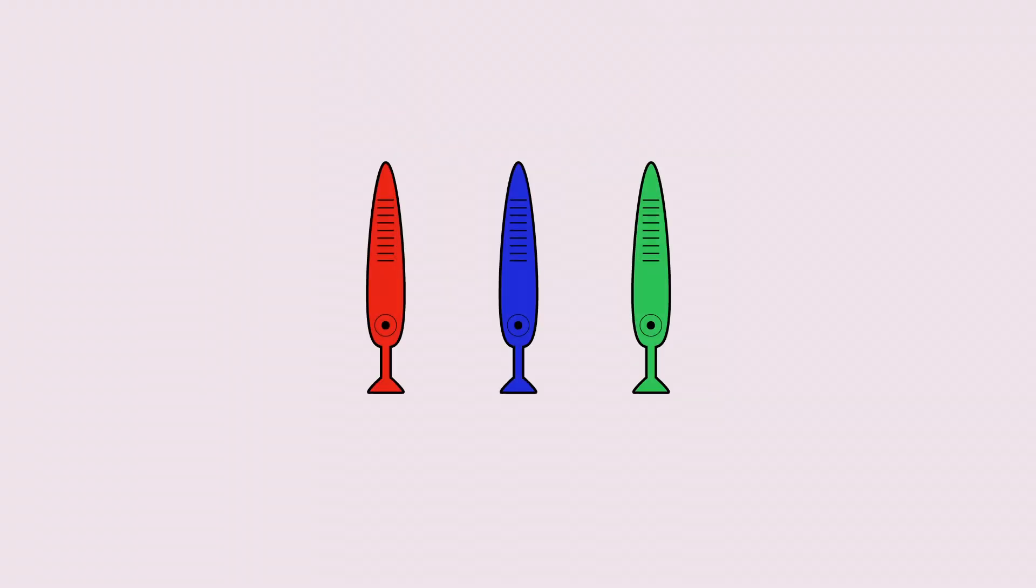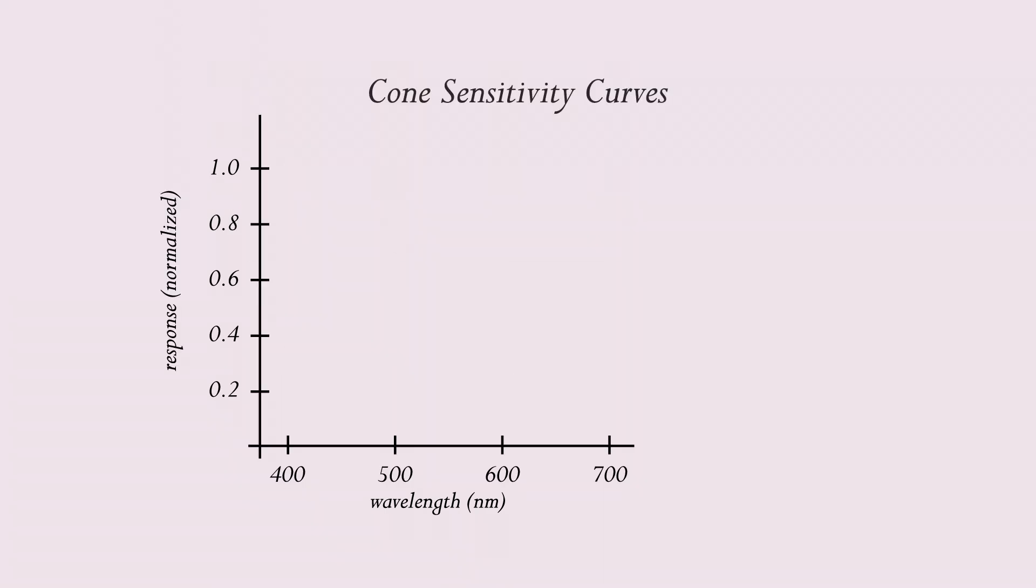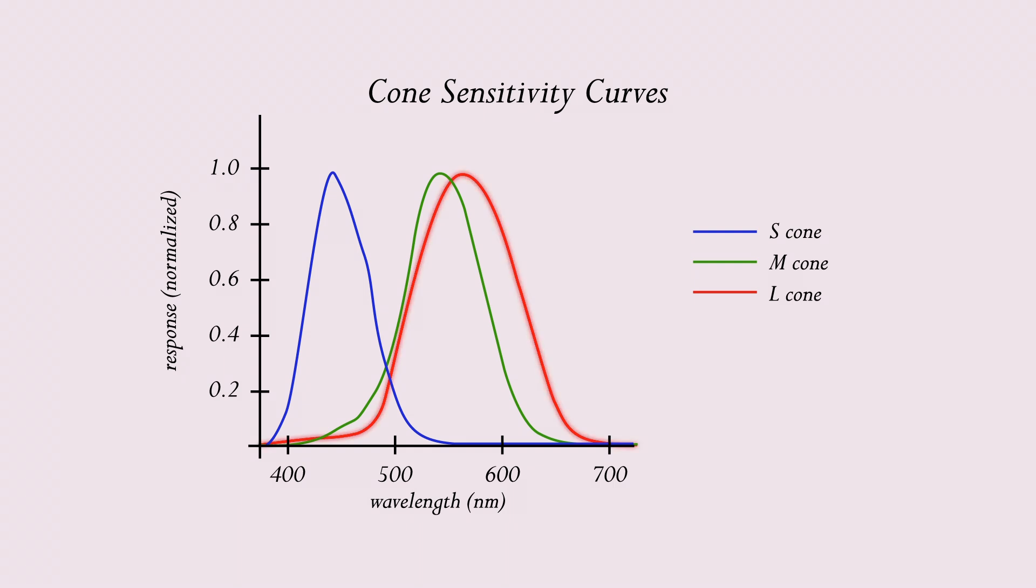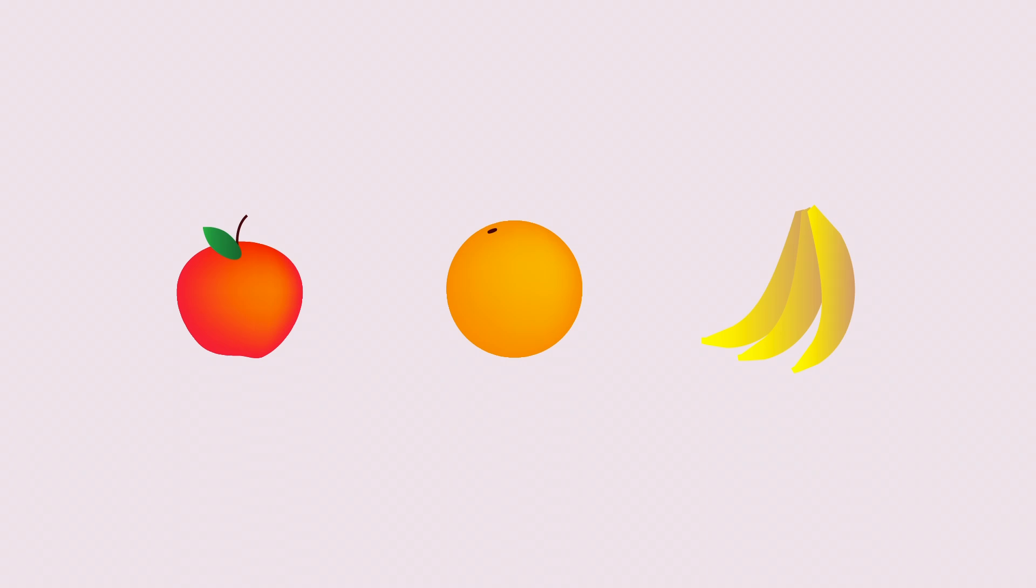Cones come in three varieties, each sensitive to a different range of light. Interestingly, we have more cones sensitive to red light, meaning our vision is best for warmer colors, like reds, oranges, and yellows.